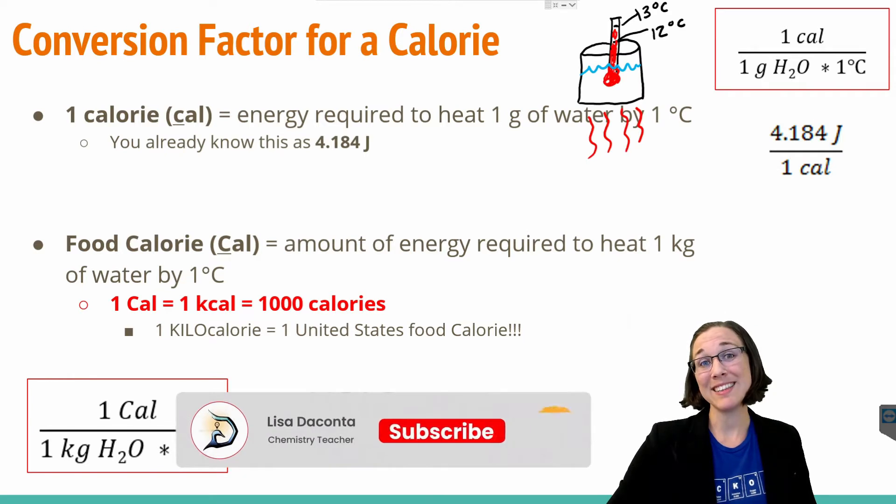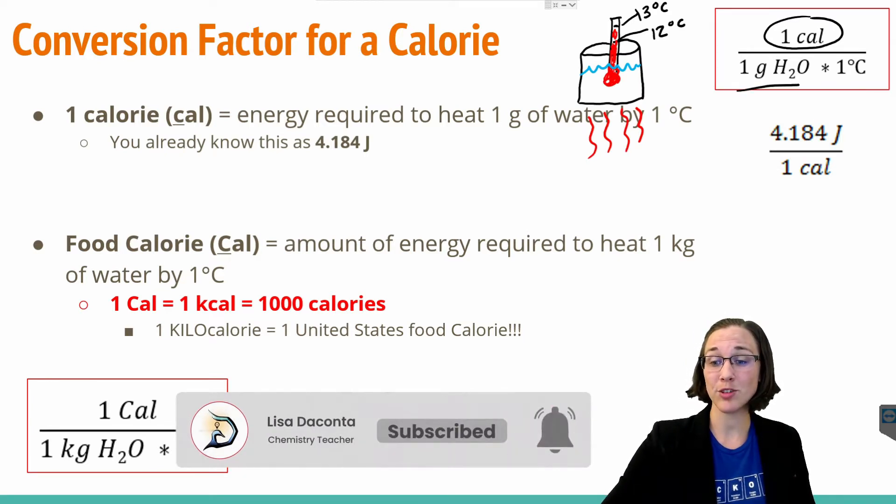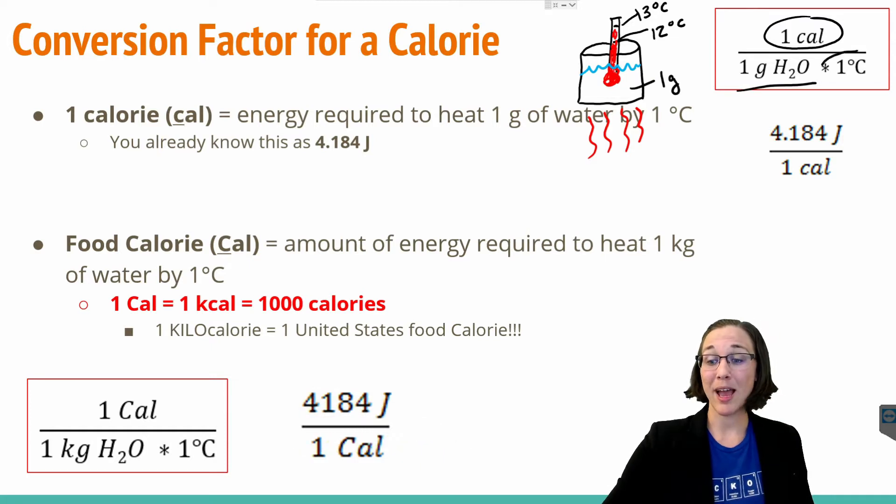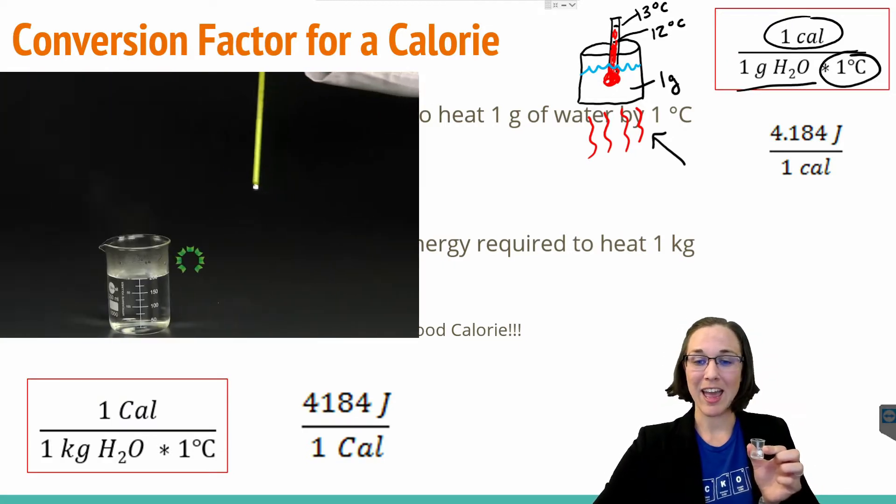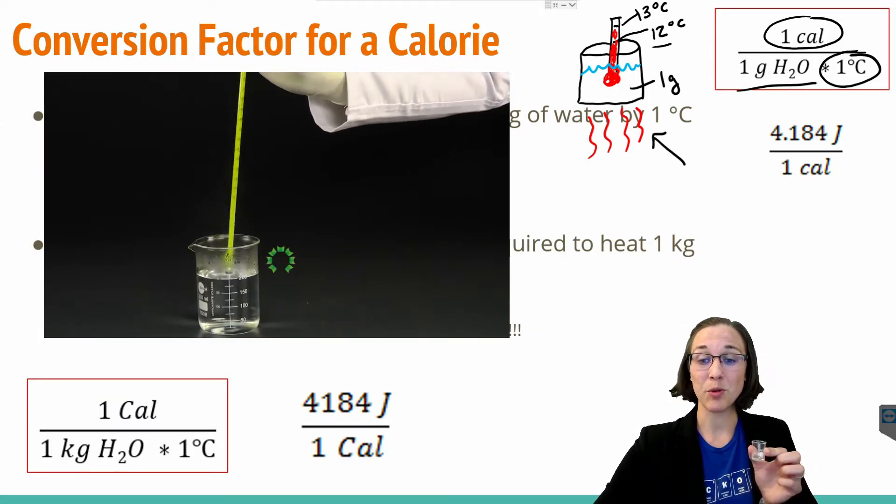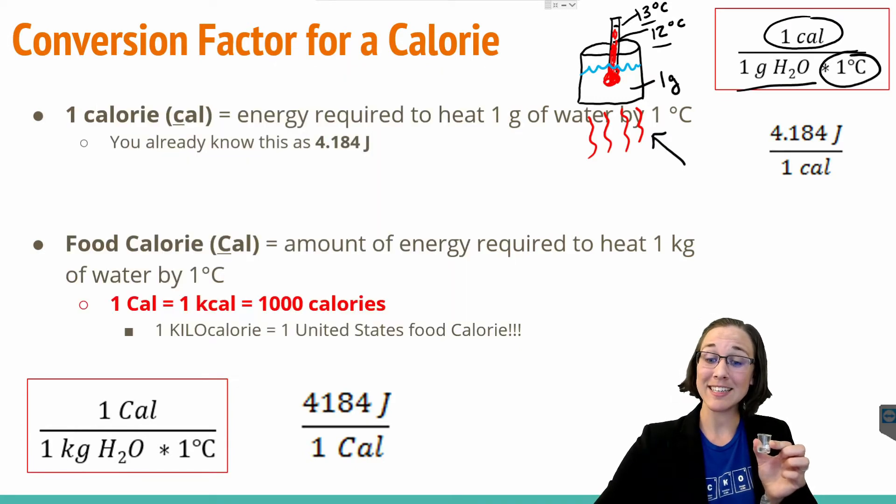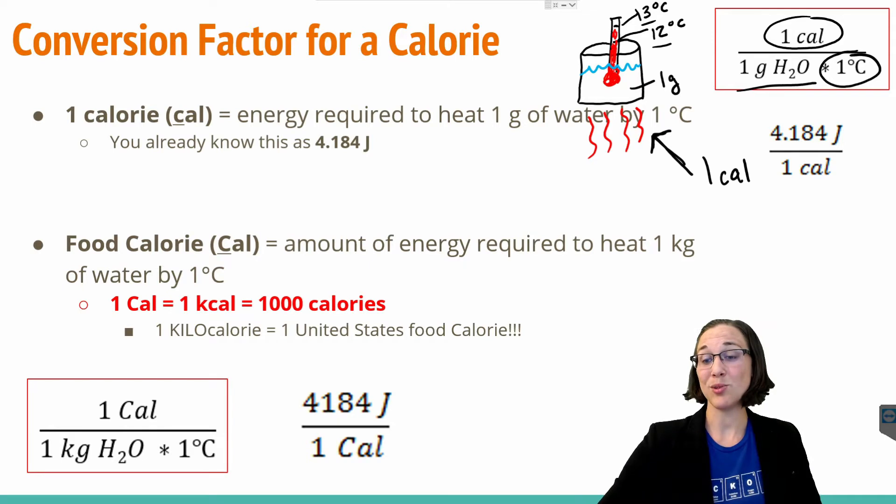We can also represent this conversion factor as one lowercase calorie is equivalent to one gram of water raised by one degree Celsius. In other words, if we were to add heat to that little tiny beaker of one gram of water and a thermometer showed it raising from 12 to 13, that heat down here would be equivalent to one lowercase calorie, which is also equivalent to 4.184 joules of energy.